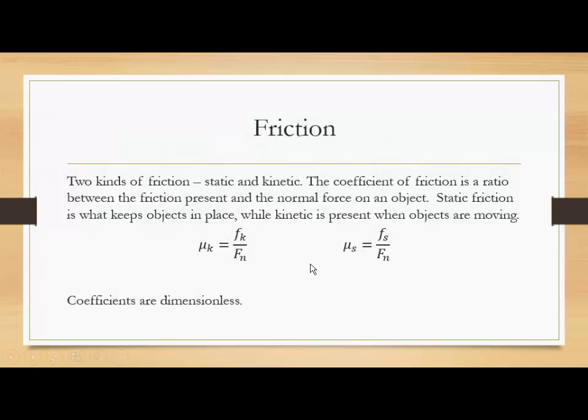So this is the part that's a review. We have two different kinds of friction, static and kinetic, right? So the coefficient of friction is a ratio between the friction that's present and the normal force that's acting on the object. Static friction is what keeps objects in place, while kinetic friction is present when objects are moving. These coefficients are dimensionless, but your friction and your normal force both should be measured in newtons.